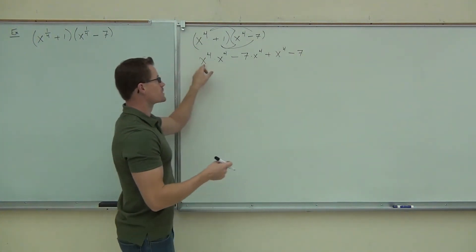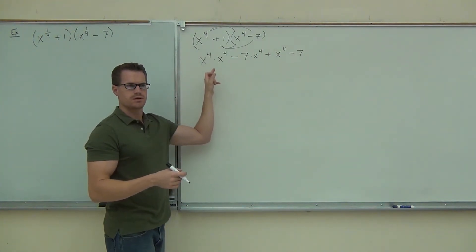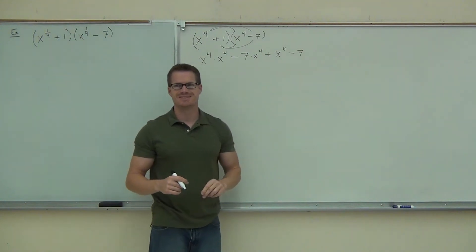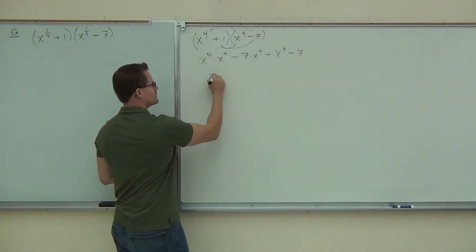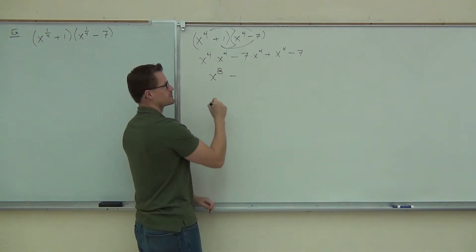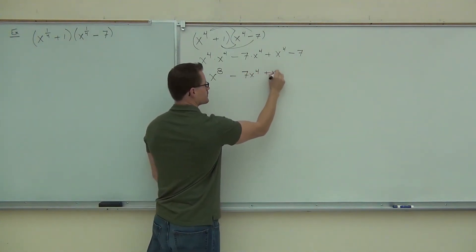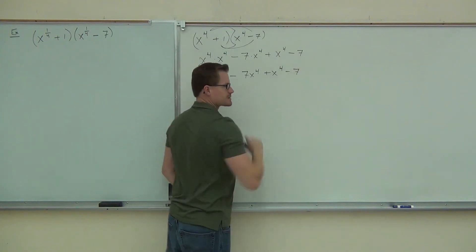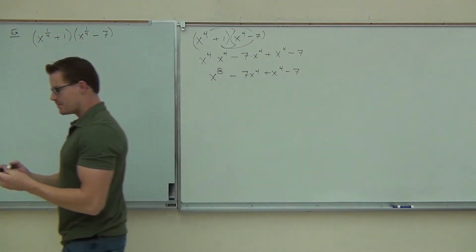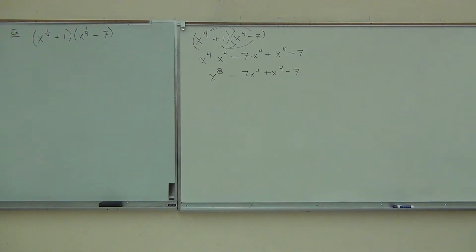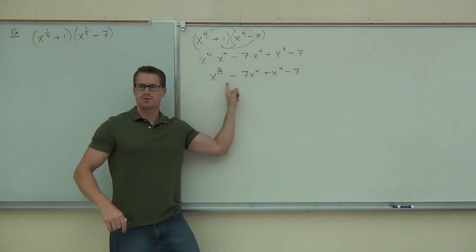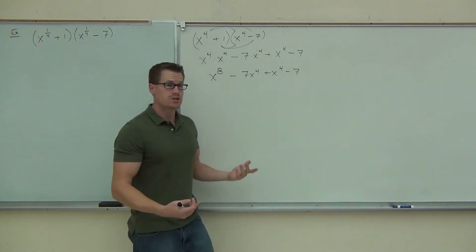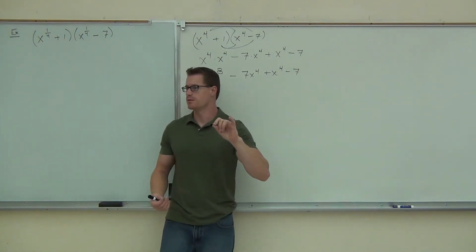We're actually adding those exponents. So instead of x to the sixteenth, we're getting — folks, you've got to play along — x to the eighth. Now, last time the last thing I taught you is that we can't combine terms unless you have exactly the same variable raised to exactly the same exponent. So in our case, I asked: could we add together x to the eighth and x to the fourth? Are those like terms? However, we do have a couple of things we can combine. What could we combine here?